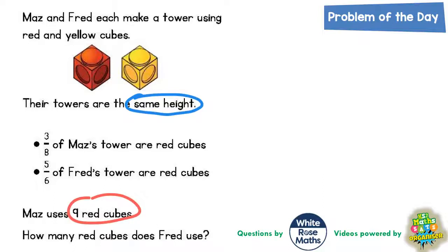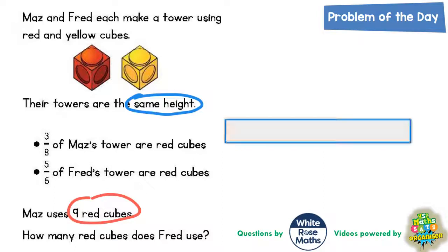The easiest thing to do here is to start drawing a bar model. Any questions involving fractions with different denominators, let's see if a bar model can take us somewhere. This first bar represents Maz's tower, and Maz's tower is talking about 3 eighths, so we need to split her bar into eighths.